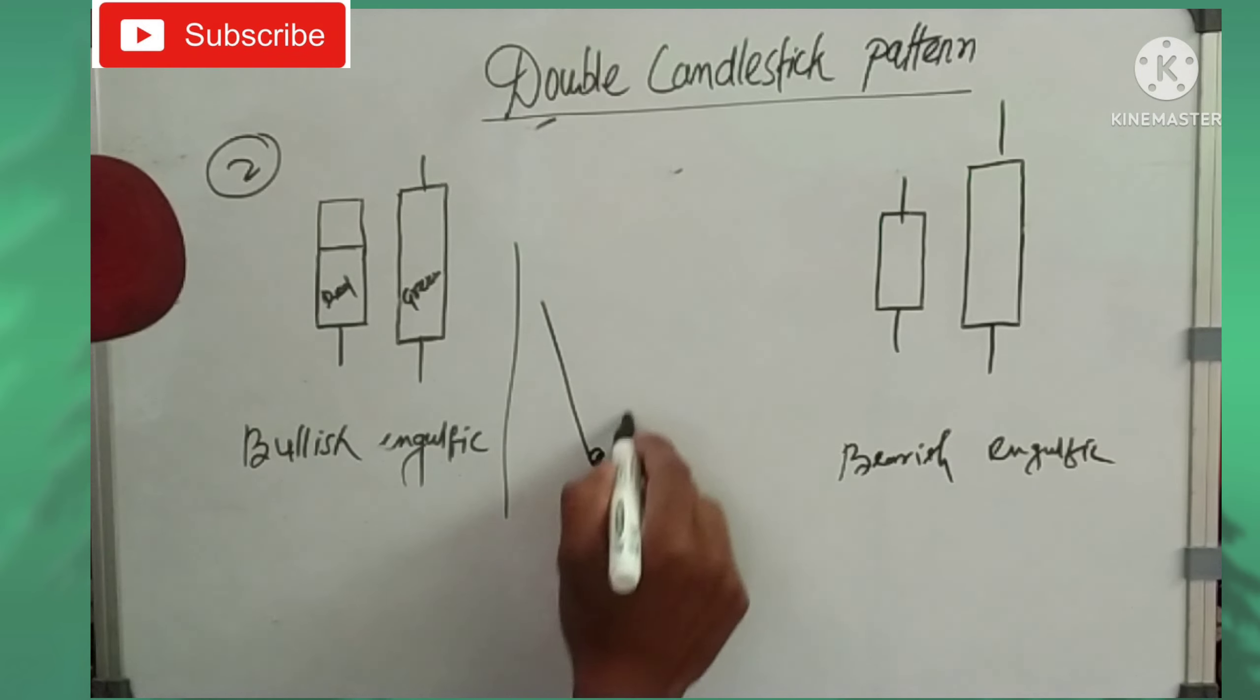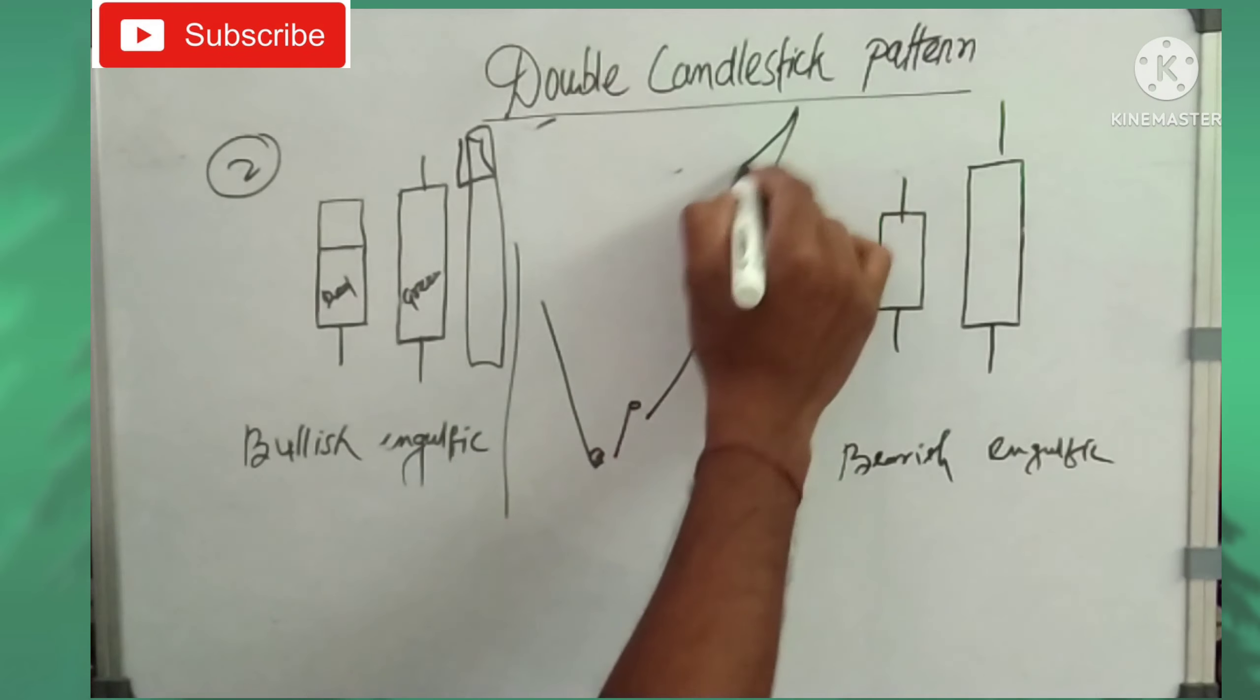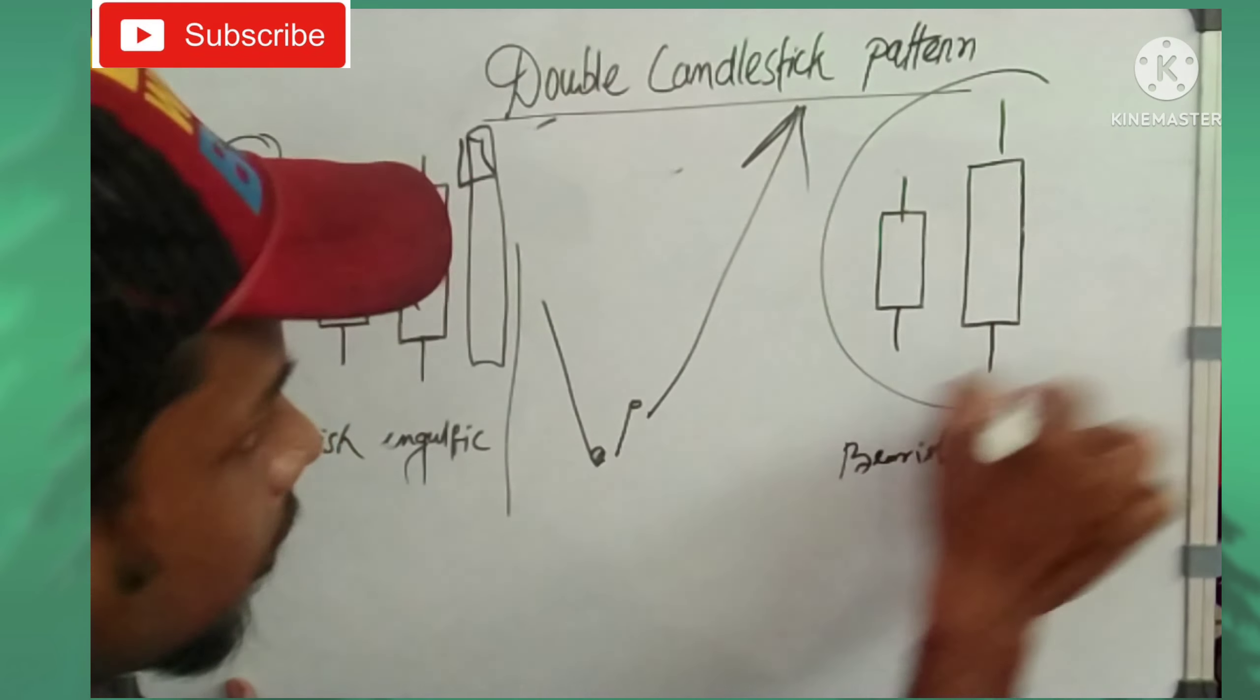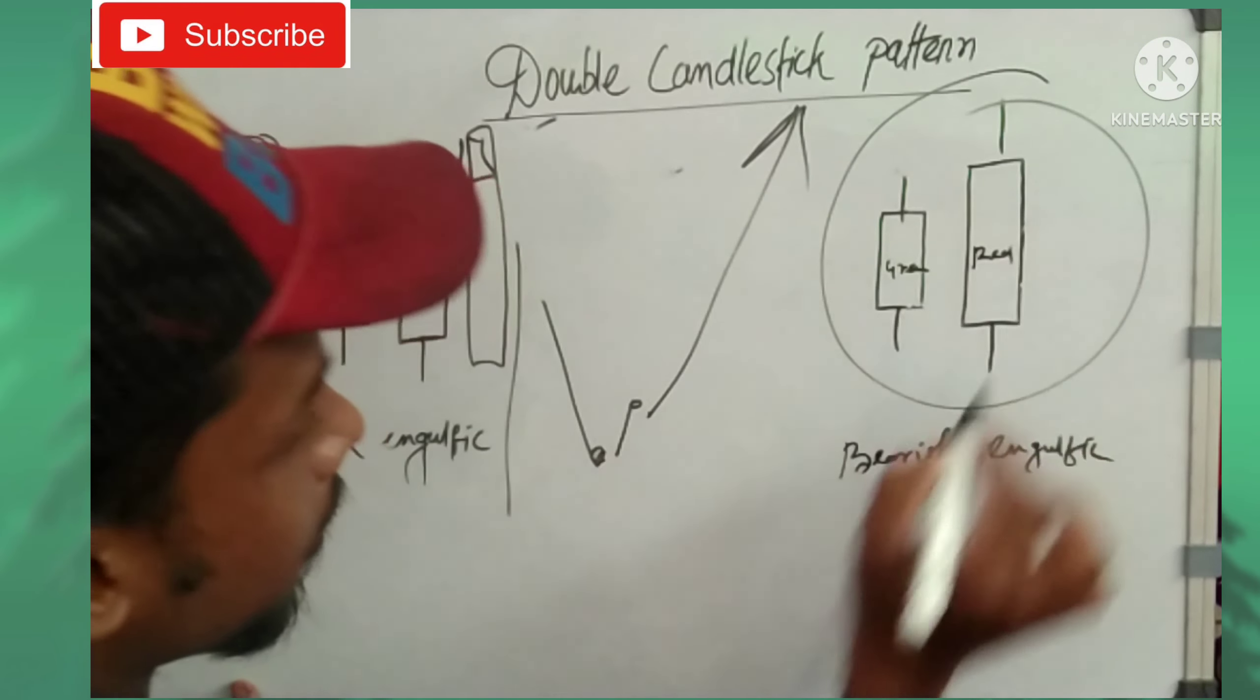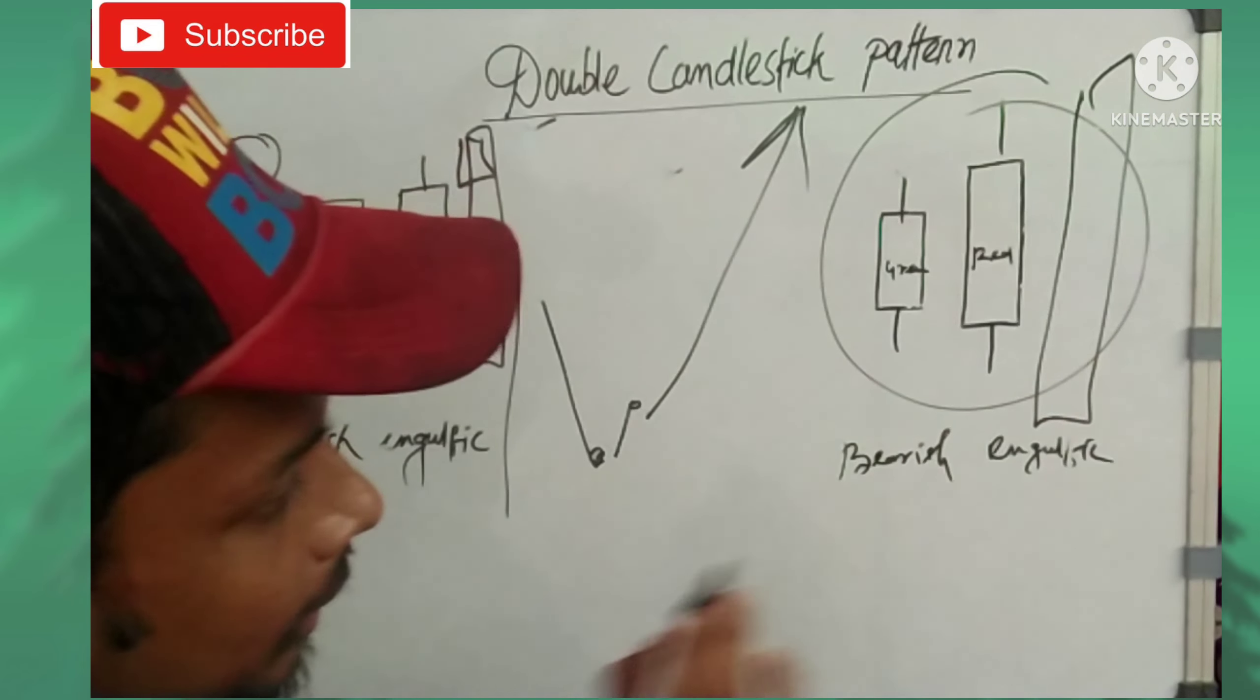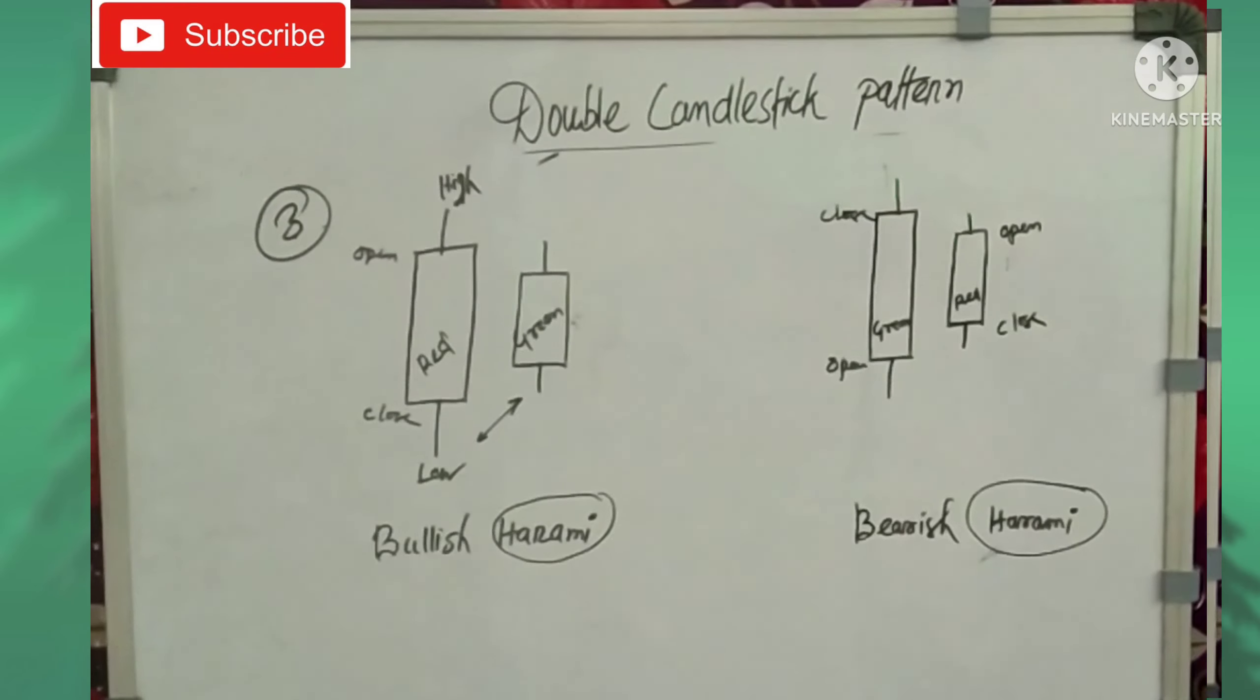After the engulfing pattern forms, we wait for the next candle. When the next candle forms, we can trade based on this confirmation.